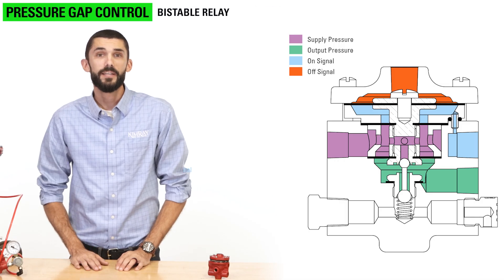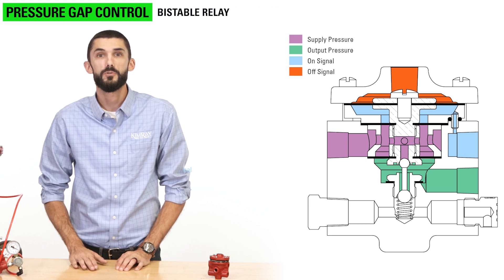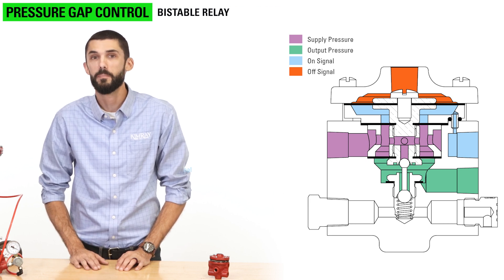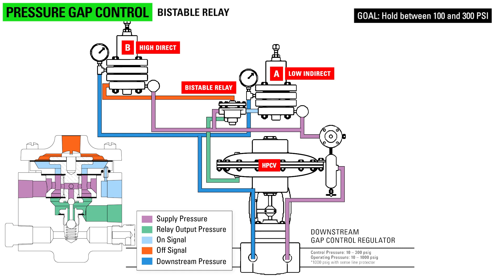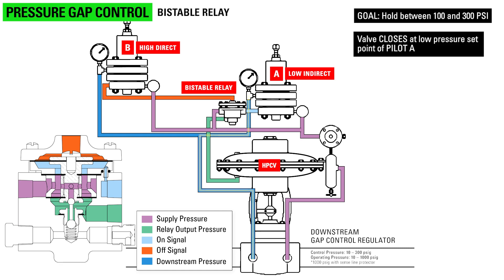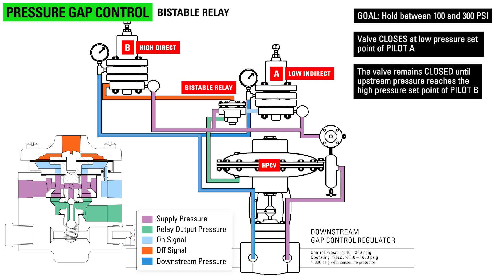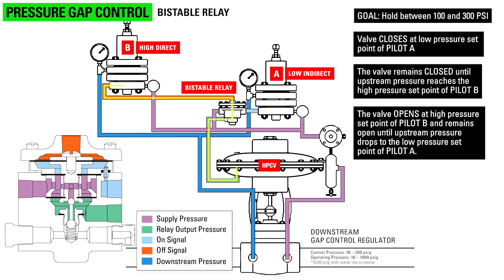If you need to pneumatically control pressure range or gap, you can use the bistable pneumatic relay with two pneumatic pilots. The pressure will fluctuate between the two set points of the pilots. For example, say you want a high pressure control valve to hold pressure between 100 and 300 psi. The high pressure control valve closes at the low pressure set point of pilot A. The valve remains closed until upstream pressure reaches the high pressure set point of pilot B. The valve opens at the high pressure set point of pilot B and remains open until the upstream pressure drops below the low pressure set point of pilot A.